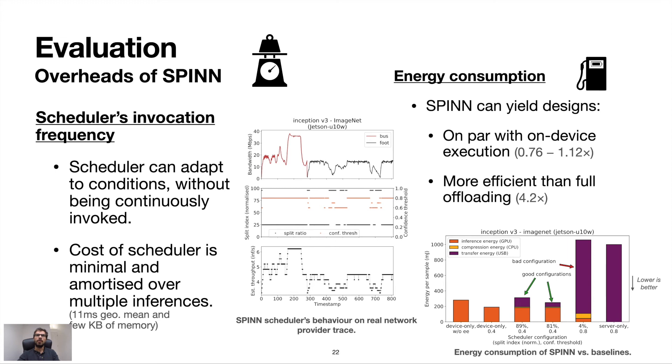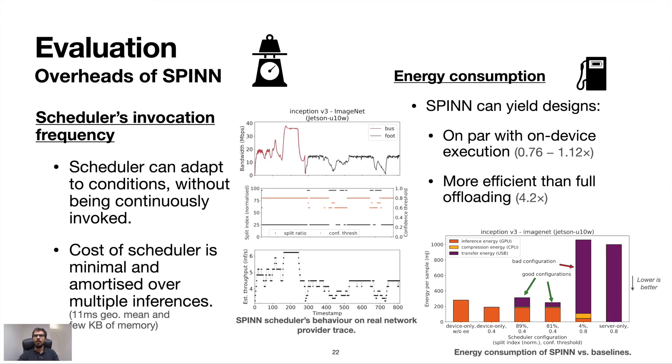Last, we measured the overheads of our system in terms of the scheduler invocation and the energy consumption of the user's device. To assess the responsiveness of spin's scheduler to adapting to dynamic network conditions, we target a real bandwidth trace from a Belgian ISP over different human activities. The system can adapt to varying conditions, depicted by the similar trajectory of the first and last plots of the leftmost graph, with minimal overhead, since it does not have to be continuously invoked. At the same time, the middle plot illustrates the different scheduler choices over the user bandwidth trace in terms of split point and early exit policy.